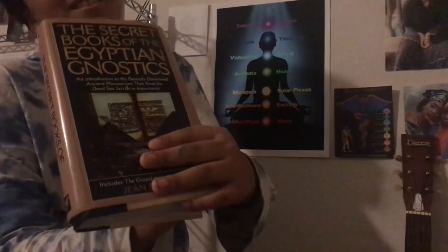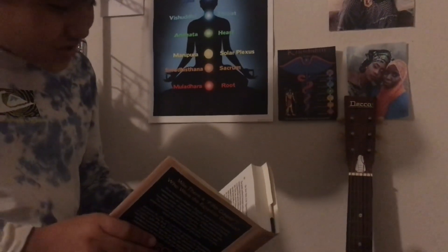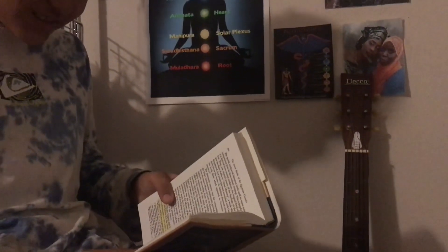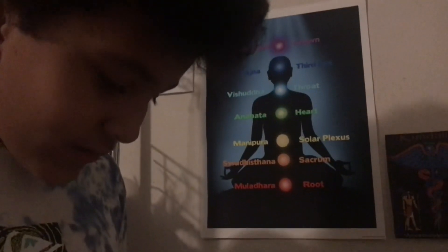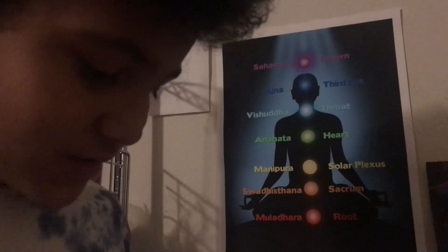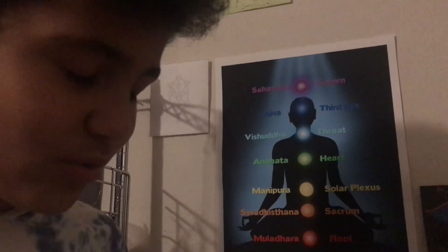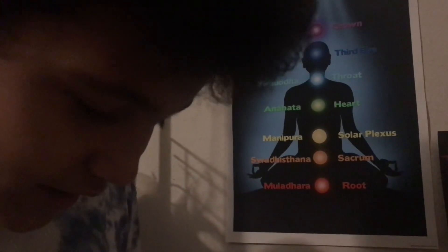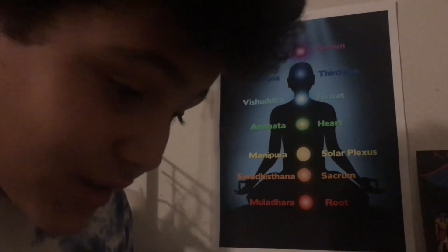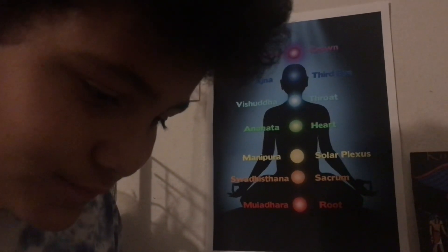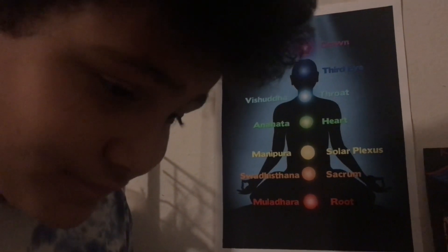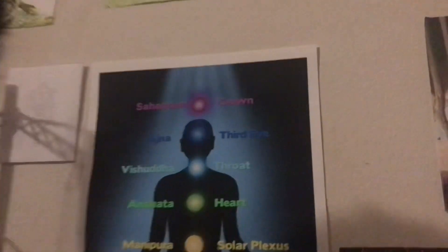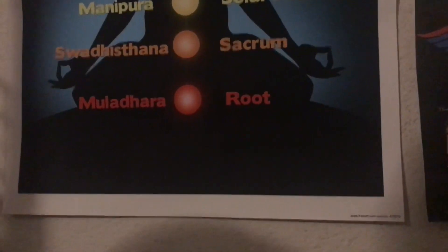So we're continuing to read the Secret Books of the Egyptian Gnostics. We are on page 292 and 293. Go ahead and start reading. Know and believe that the serpent at the beginning of creation was indispensable to the order of the world. Right, so the serpent is the kundalini. So long as he kept his place, he was a great servant created to bear the yoke and servitude of kingdoms. So the kundalini, which is the serpent, is actually a servant of you. It serves you. You're the god.